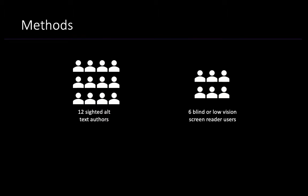To do so, we conducted two complementary studies. The first was a combined interview and usability testing session with 12 sighted alt text authors, since we're trying to improve the experience of writing alt text and the quality of alt text generated by them. We then performed a complementary interview study with six blind or low vision people who use screen readers, to understand if author and screen reader user understandings of alt text differed, and what screen reader users thought of the quality of the alt text generated by our author participants.